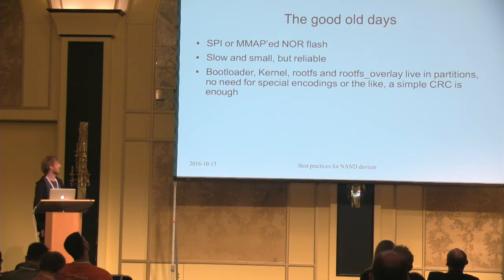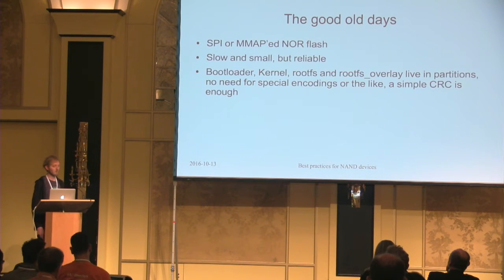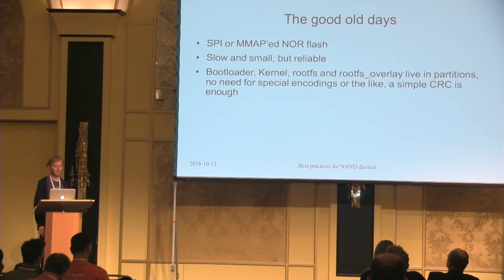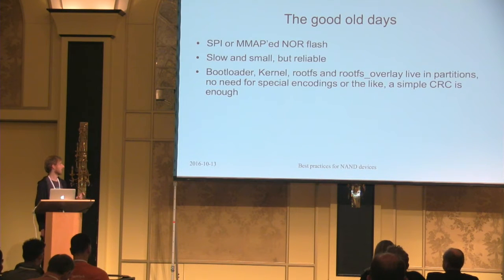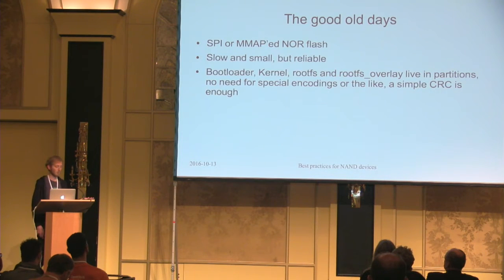In the good old days, we had very small NOR flash memory, connected via SPI or memory-mapped. It was small and slow, but also reliable. We could just use a partitioning scheme in which the bootloader, the bootloader environment, the kernel, the root file system, and the overlay were just living peacefully inside their partitions. There was no need for special encodings. A simple checksum in the image was enough, provided by U-Boot, so there just wasn't much room for discussion.